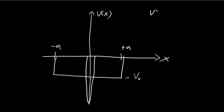For the Dirac delta potential, the potential looks something like this. If you integrate this component, you'll see that the area is actually equal to alpha. So by definition, this area is going to be equal to alpha.